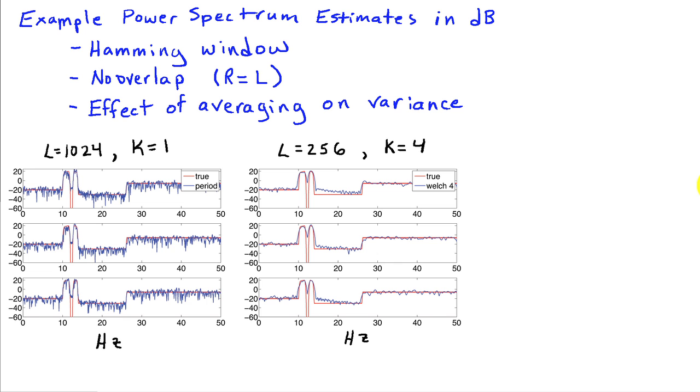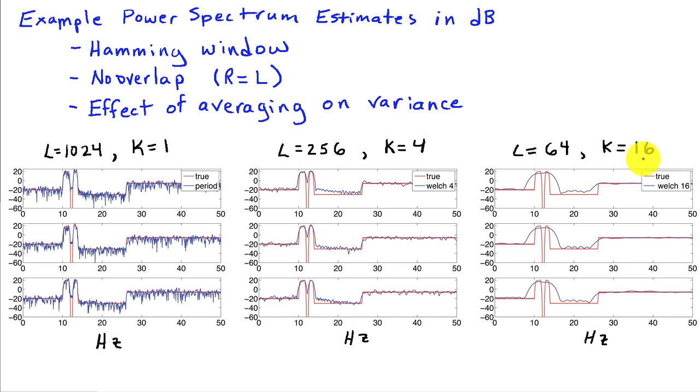If we take this further and we divide it up into 16 segments of length 64 each, we can see even a further decrease in variance. Particularly if you look at some of these flat regions here, you see very little variance for the average of the 16 segments that Welch's method obtains, whereas you have quite a bit more variance in the periodogram, and even more in averaging of four. So by averaging more segments, we get a significant reduction in the variance.